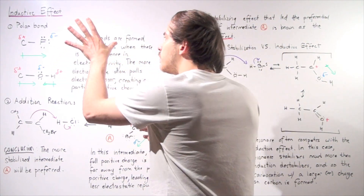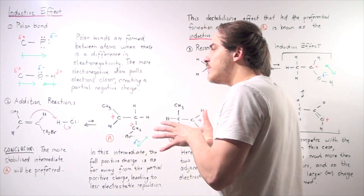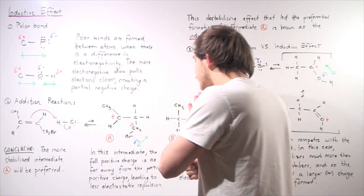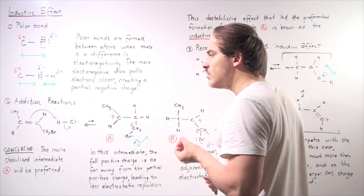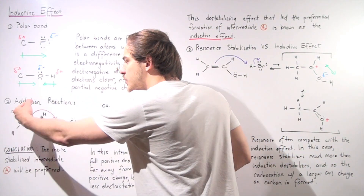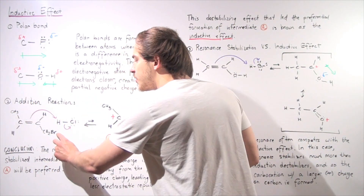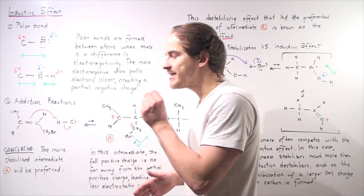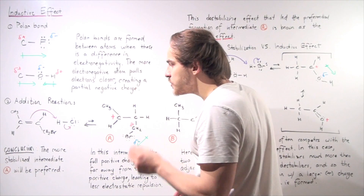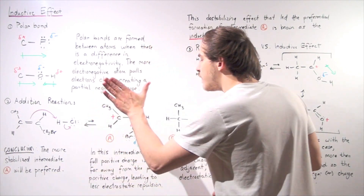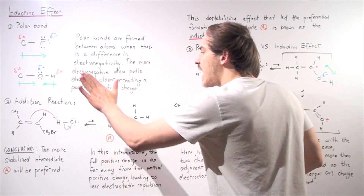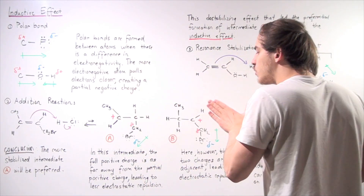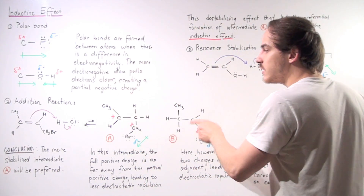How do polar bonds come into play in hydrohalogenation reactions? Consider an asymmetrical alkene reacting with an HCl molecule. Two pathways can be taken: the first pathway leads to carbocation intermediate A, and the second pathway leads to a different carbocation, intermediate B.